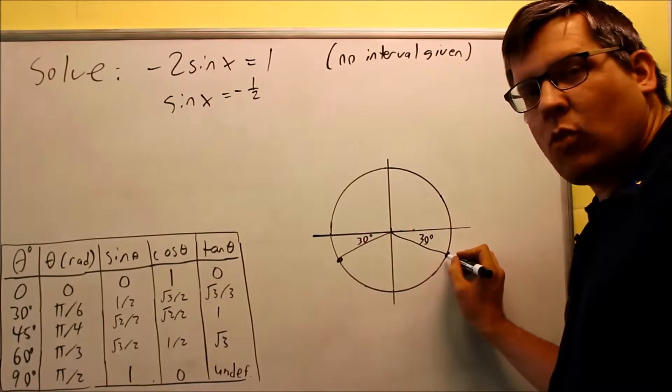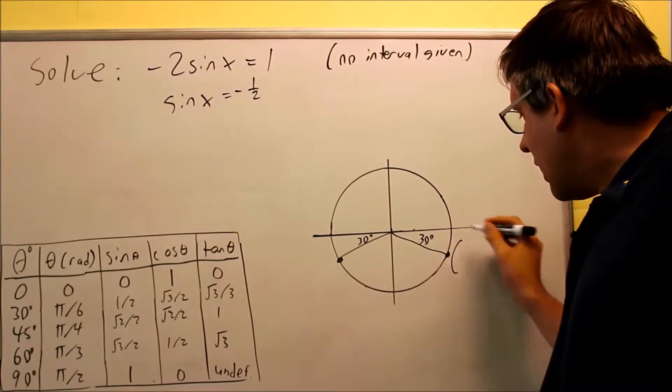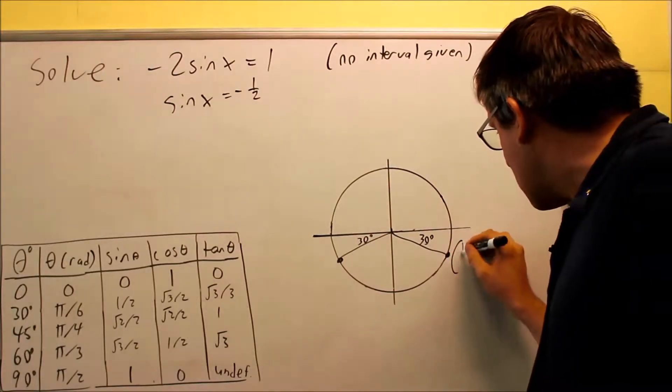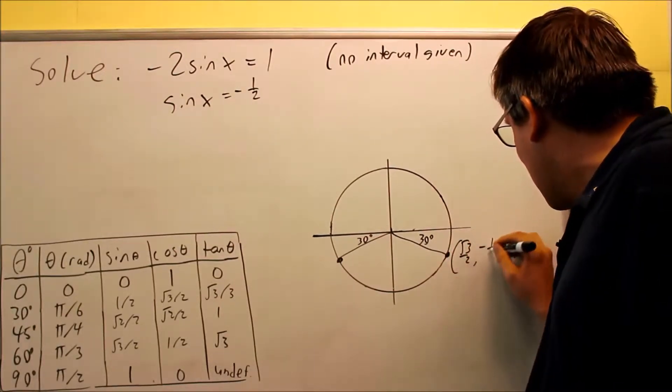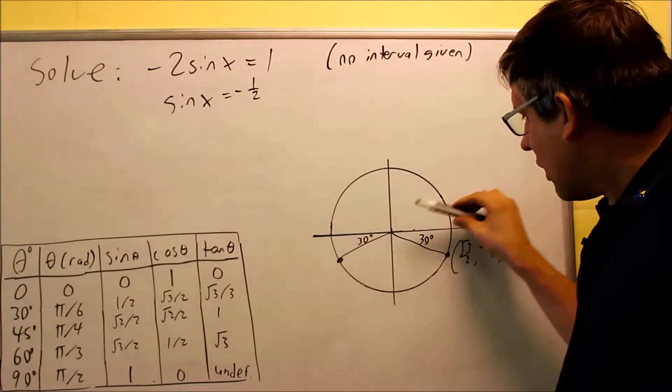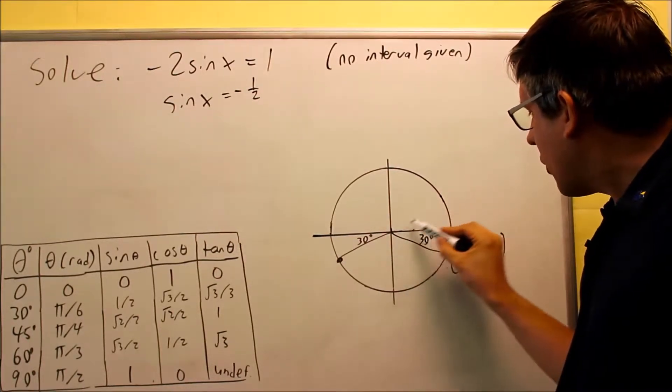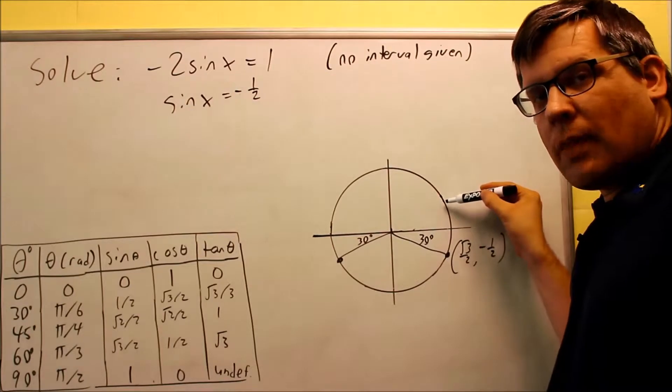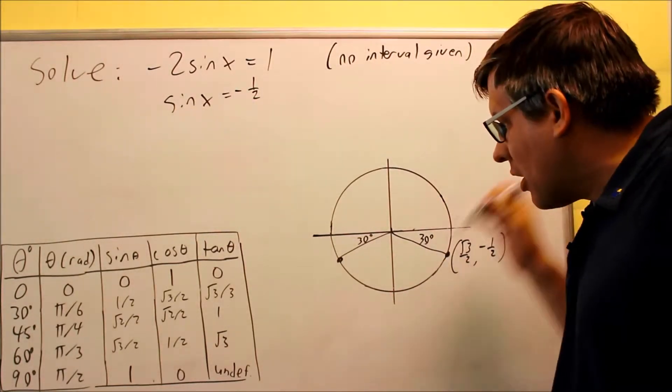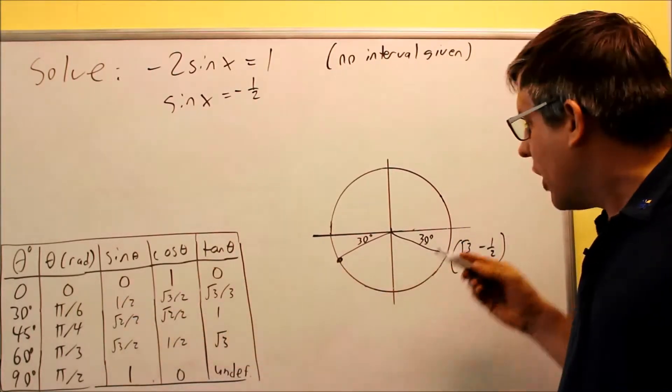These two right here would have the same y value. We already talked about this in a previous video, but this is square root of 3 over 2 and negative 1 half down below here. The reason why it's negative is because normally, if I was right here at 30 degrees up here, that has a positive y value of 1 half because it's here and that's the value directly from my table.